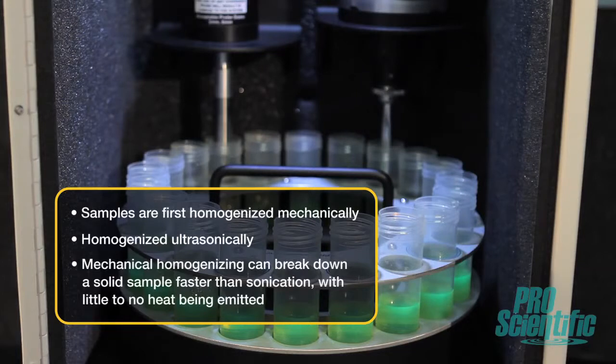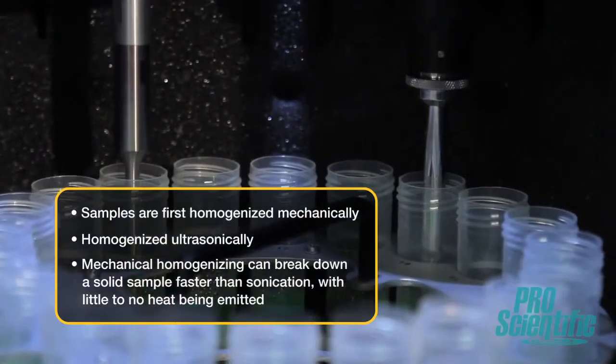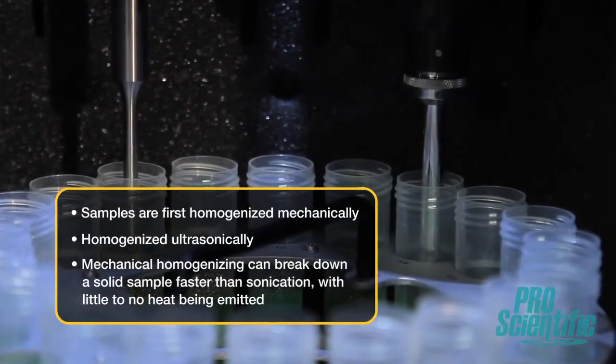In this mode, samples are first homogenized mechanically, and then homogenized ultrasonically. Mechanical homogenizing can break down a solid sample faster than sonication, with little to no heat being emitted.